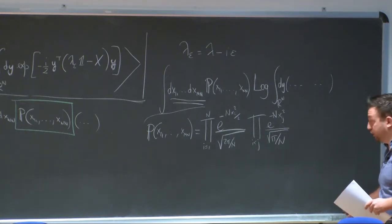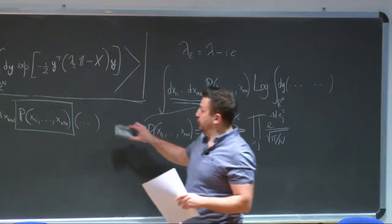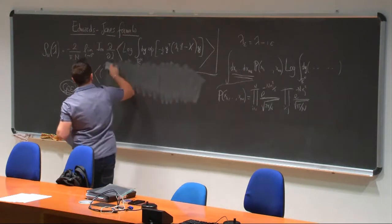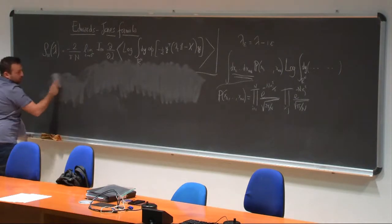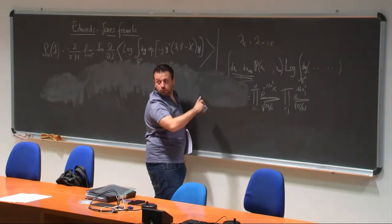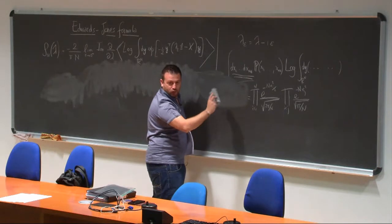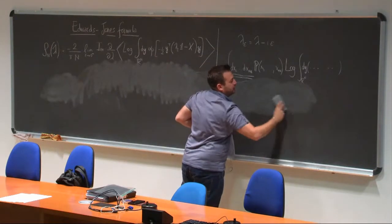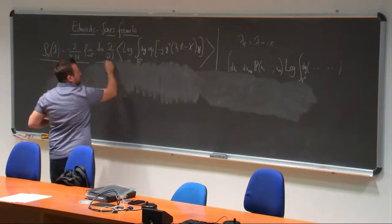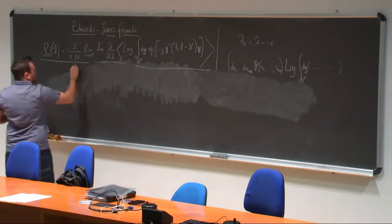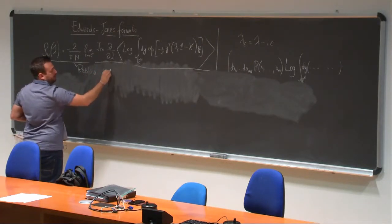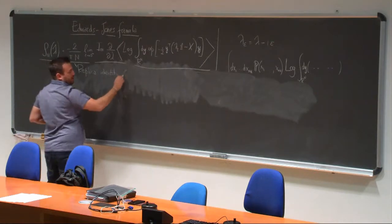What is the idea to get rid of the logarithm? This is a beautiful and elegant construction — full of mathematical problems — but the idea is the so-called replica identity, sometimes referred to as the replica trick.